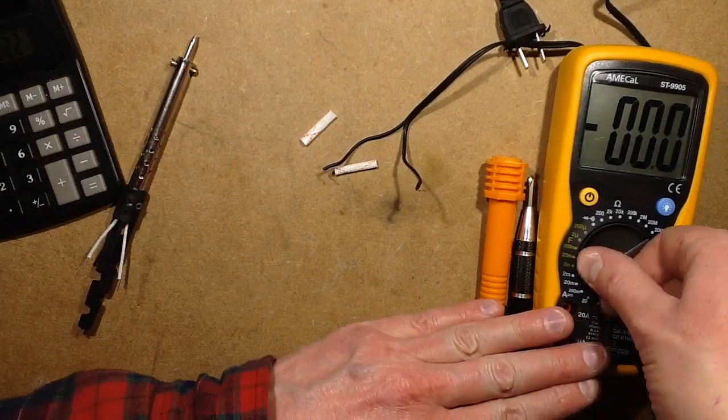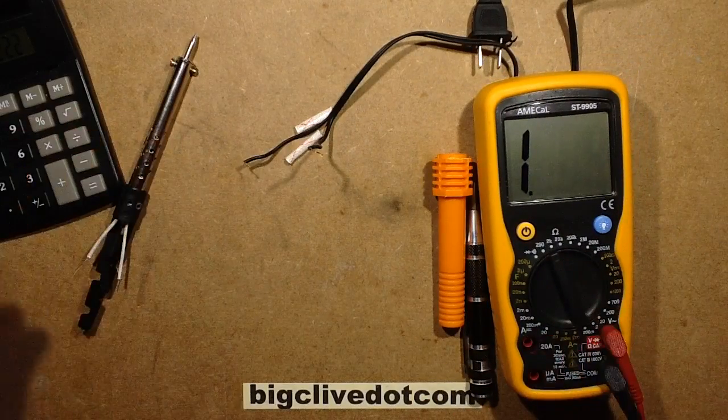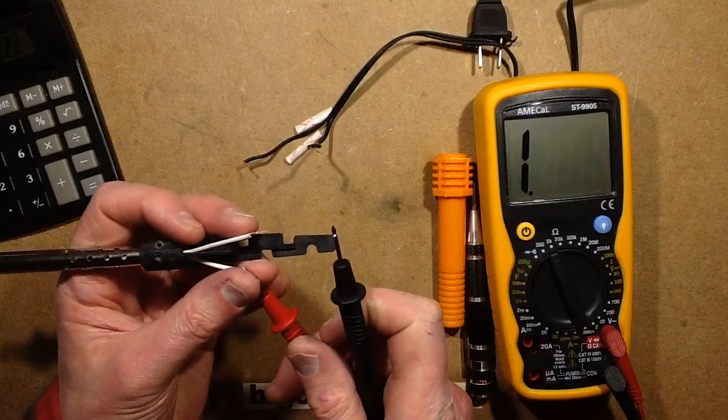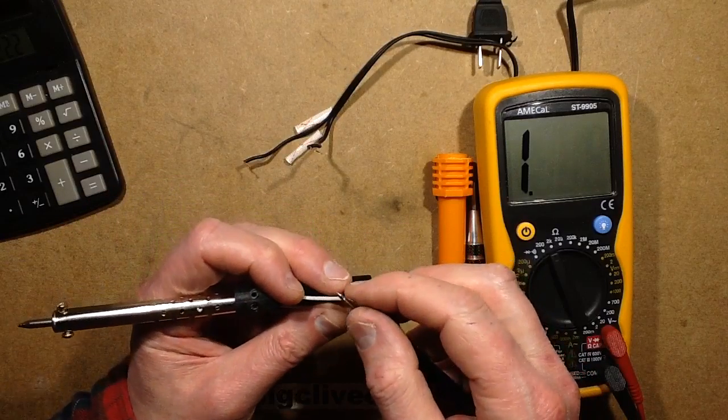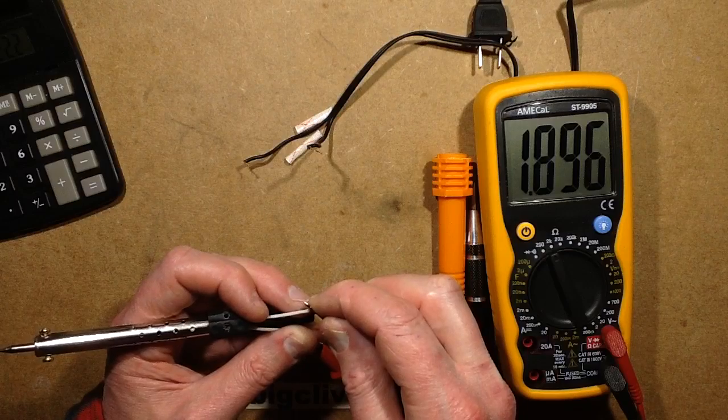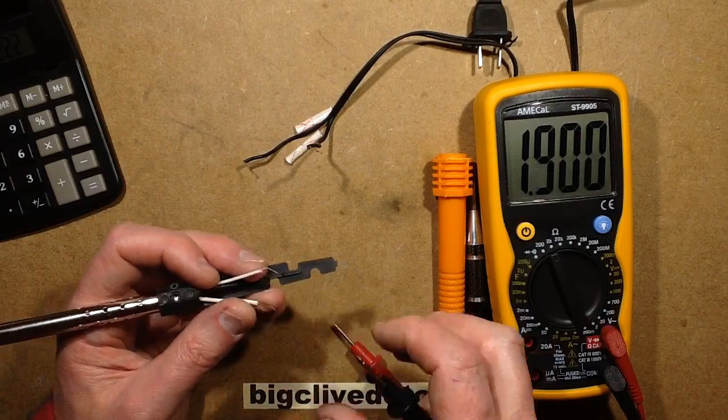So let's turn this to 2k and my finger resistance won't be too significant so I'll just hold the wires on. Yeah, 1.8 which will probably fall as it heats up a wee bit. Yeah, that's okay, that's reasonable enough.